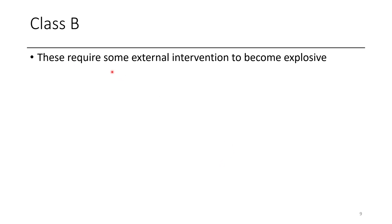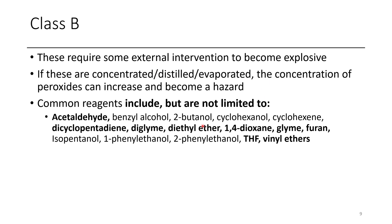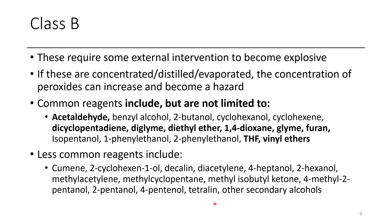Class B chemicals require you to do something — like concentrate them — before they become explosive. Peroxide levels form slowly and they won't just detonate on their own, but if you concentrate them on a rotavap, distill, or slowly evaporate, the concentration increases and this becomes a hazard. Common Class B examples include acetaldehyde, benzyl alcohol, 2-butanol, cyclohexanol, cyclohexene, dicyclopentadiene, diglyme, diethyl ether, 1,4-dioxane, glyme, furan, isopentanol, 1-phenyl ethanol, 2-phenyl ethanol, THF, and vinyl ethers. In general, these tend to have either a vinyl group — which can easily react with radicals — or a very weak C-H bond, such as one alpha to an ether. It's always worth checking on a reagent for possible safety hazards, especially if you'll be working with it for several months.